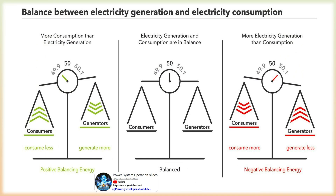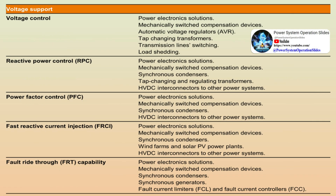MFRR is designed to provide power for a longer duration, often several hours. It can include various resources that are not actively synchronized with the grid but can be started and brought online relatively quickly. This category may also encompass demand response programs and energy storage systems, where certain loads can be manually curtailed or increased to provide additional supply or demand to restore grid frequency. Grid operators initiate MFRR when AFRR and other reserves are insufficient to address frequency deviations.